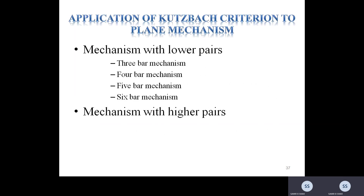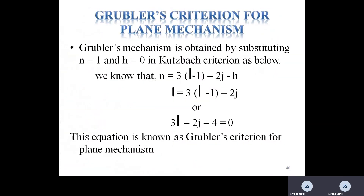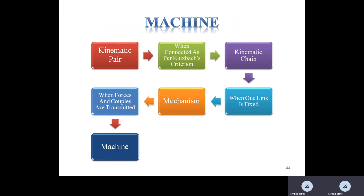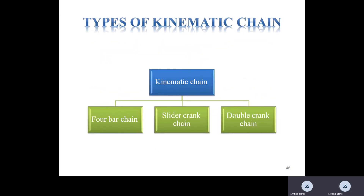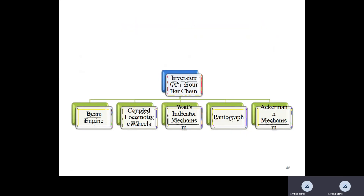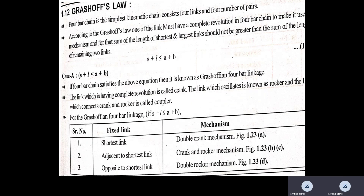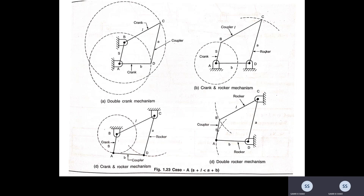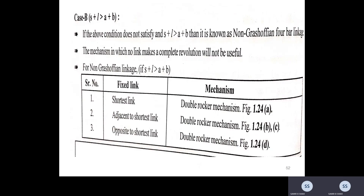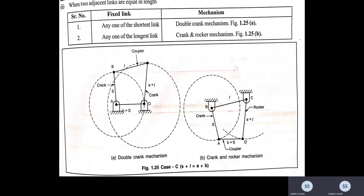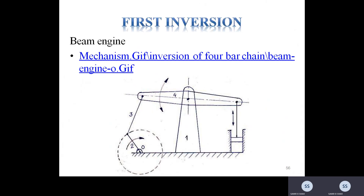Then we discussed the difference between actual mechanisms, their key criteria, and applications. After that we talked about inversions, where four-bar, slider-crank chain, and double slider-crank chain were discussed. Four-bar chain mechanism was already covered, including how its inversions can be generated. If you are not clear, please refer to my previous video where I show how we generate all the four-bar chain inversions.